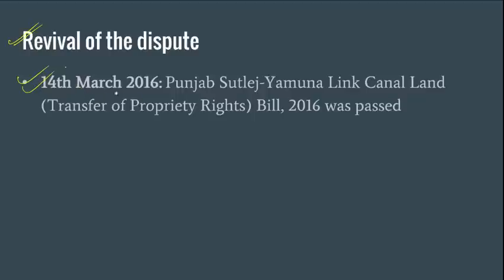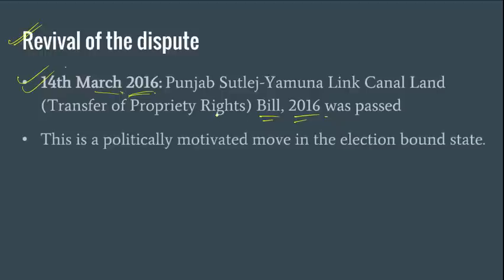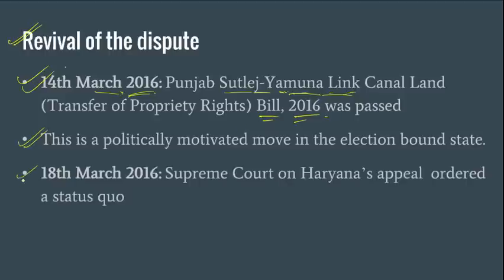When Punjab came to know that the Supreme Court was going to decide on the matter, they passed a bill on 14th March 2016 — the Punjab Satluj Yamuna Link Canal Land Transfer of Proprietary Rights Bill 2016 — which aimed to give back all the land acquired for the project to the original owners. Haryana again moved the Supreme Court, arguing that if the land is given back, the project cannot be implemented while the court has not yet given its verdict. The Supreme Court on 18th March 2016 ordered a status quo on the matter.